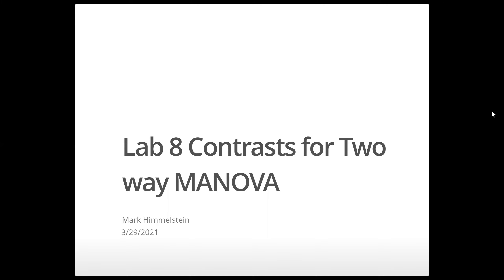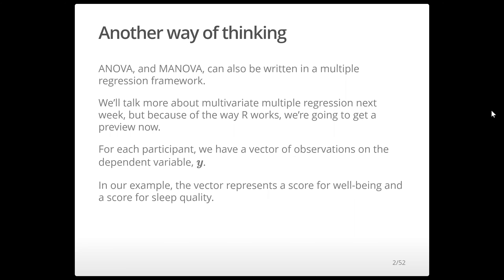Now let's talk about contrasts in two-way MANOVA. We're going to have to take a little detour to start talking about this. ANOVA and MANOVA can also be written in a multiple regression framework — we can build an equivalent regression model to any ANOVA model. We'll talk more about multivariate multiple regression next week, but because of the way R works, we have to start a little preview now.